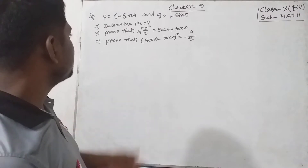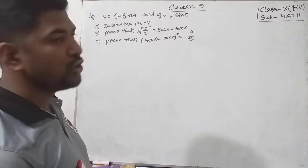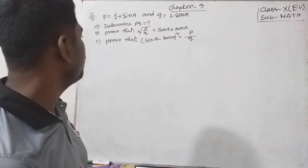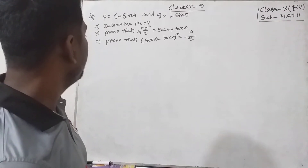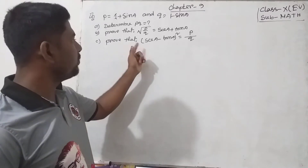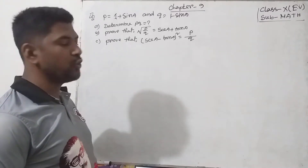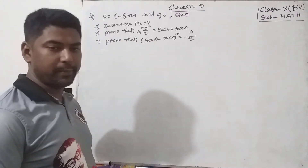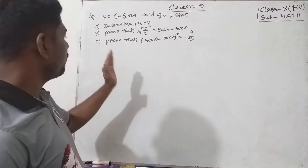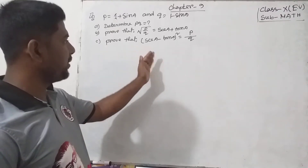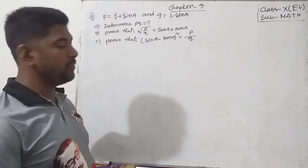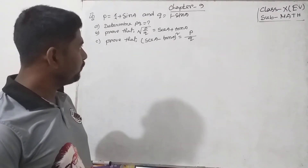Number A: determine PQ — what is the value of PQ? Number B: prove that root over P by Q equals sec A plus tan A. Number C: prove that sec A minus tan A whole square equals P by Q.